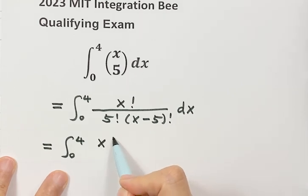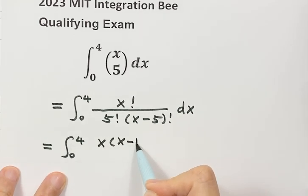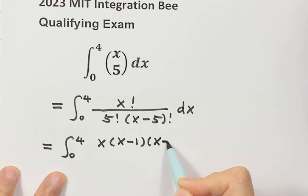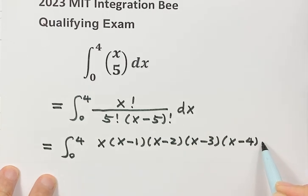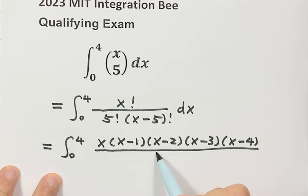On top, that will be x times x minus 1, x minus 2, x minus 3, and x minus 4, then x minus 5 factorial. Cancel out the one on the bottom, so the bottom is just 5 factorial, then dx.